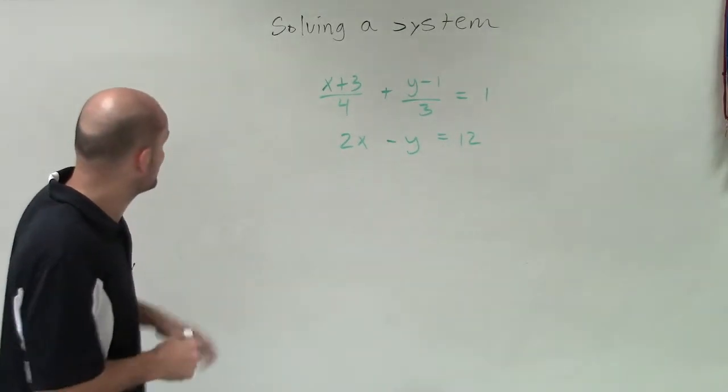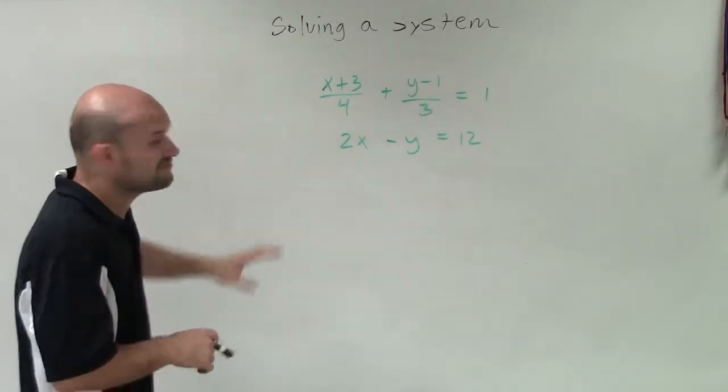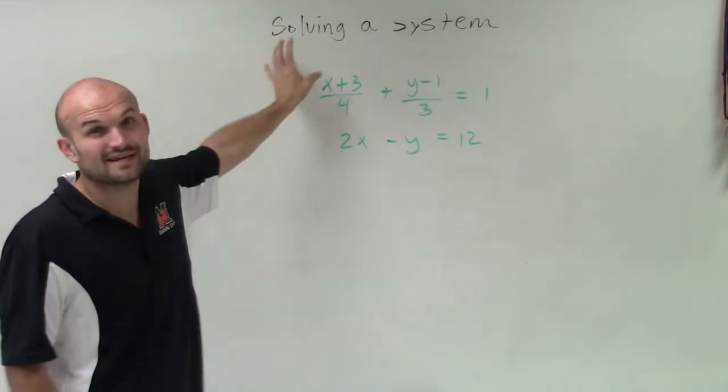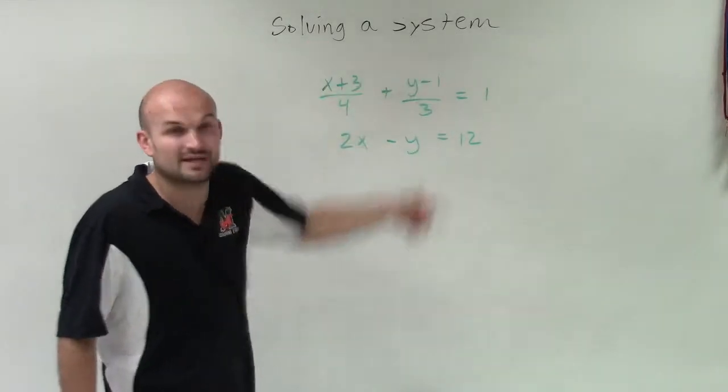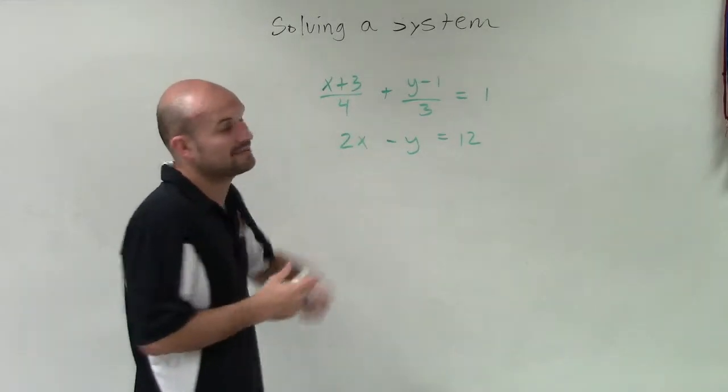I'm actually going to break this up. Let's simplify each one of these. First of all, this first equation is just ridiculous. I need to get rid of these fractions. I don't want to be divided by 4 or divided by 3. So to eliminate these denominators,